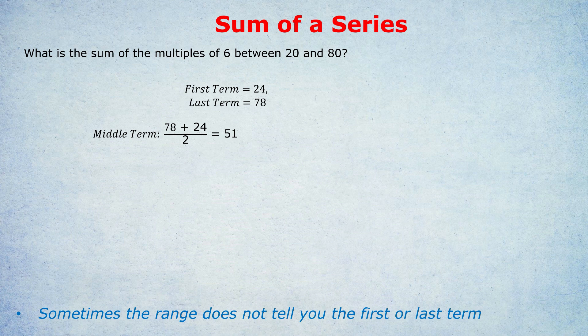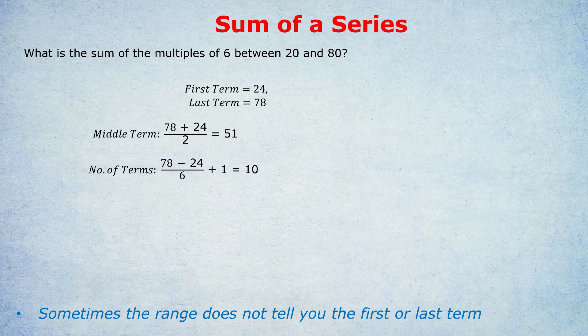How do we find the number of terms? I'll let you look at your notes if you've forgotten, but for the next question, we're not even going to look at your notes. Okay, number of terms is last term, take away first term, divided by the increment plus 1. Last term is 78. First term is 24. The increment is 6 because we're looking at the multiples of 6, so the gap between each term is 6. 78 minus 24 divided by 6 is 9. 9 plus 1 is 10. So there are 10 terms in this list.